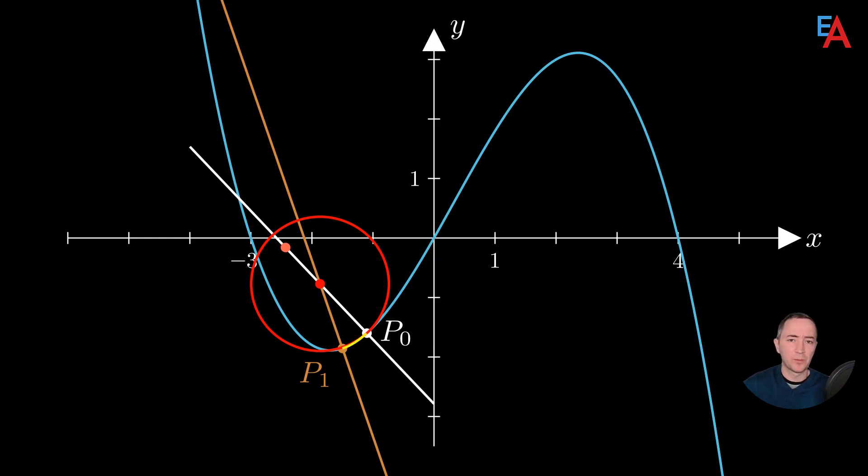The length of the arc of the polynomial between points P0 and P1 approximately corresponds to the length of the arc of this red circle between these points. This is the case from a mathematical point of view.